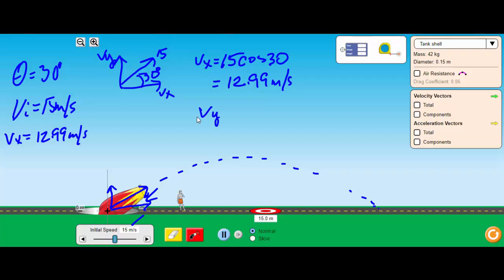Now to find my Y velocity, that's my resultant, so that's 15 times the sine of 30, so that is 7.5 meters per second. So my Y velocity is 7.5 meters per second. This velocity is 7.5, this velocity is 12.99, so I'm going to need those two to calculate what's next.